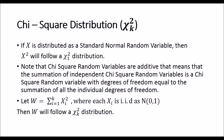If x is distributed as standard normal, then x-squared will be distributed as chi-squared with 1 degree of freedom. Note that chi-squared random variables are additive — the summation of independent chi-squared random variables is itself a chi-squared random variable, with degrees of freedom equal to the summation of all individual degrees of freedom.